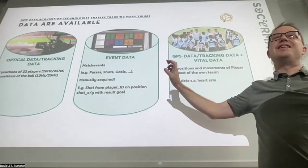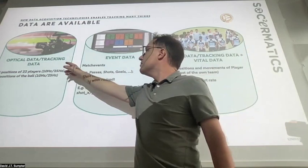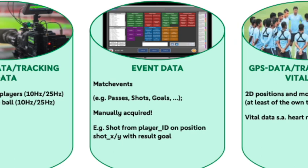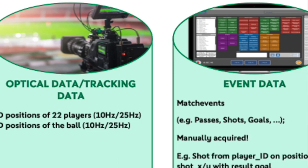What we're going to move on to today is optical data, or tracking data. This is the 2D positions of all 22 players, and we also want the 3D position of the ball. It's not always that we get precisely what we want — if we're collecting data from television, for example, we're not going to have the positions of all 22 players at once. But if, like the German Federation, you have cameras in every ground tracking all player positions, you can have detailed positional data of where the players and the ball are.